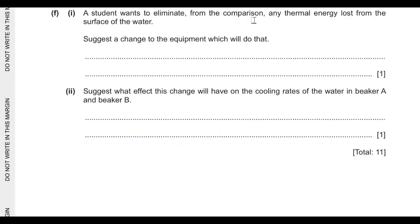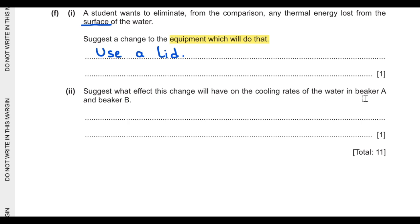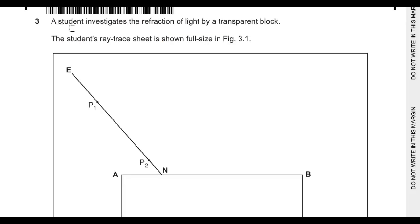Part F: a student wants to eliminate thermal energy loss from the surface of the water. You can use a lid to cover the surface to avoid energy loss. If a lid is used, the rate of cooling will decrease because evaporation would be controlled.